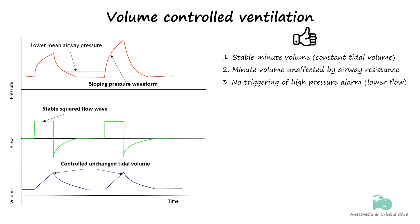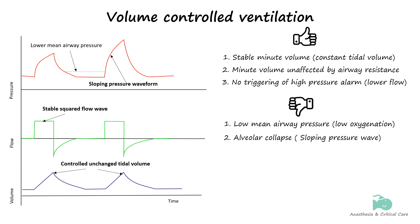Volume-controlled ventilation has some drawbacks. One issue is that the mean airway pressure is lower due to the sloped shape of the pressure waveform. This lower mean airway pressure may not be ideal for patients with severe hypoxia, who might benefit more from a pressure-controlled mode. Another disadvantage is that recruitment of lung units with poor compliance may be less effective. Lung units with a long time constant and poor compliance might not be fully recruited until late in the inspiratory phase, leaving little time for effective gas exchange before the ventilator shifts to expiration. Consequently, volume-controlled ventilation might result in greater atelectasis compared to pressure-controlled ventilation.